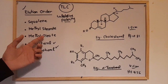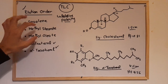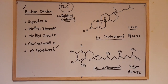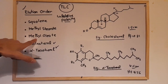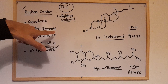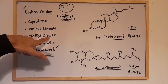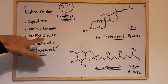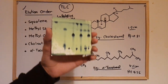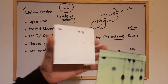Methyl stearate and methyl oleate are similar, but methyl oleate contains a double bond in its structure, making it slightly more non-polar. Because of this, methyl oleate travels slightly above methyl stearate on the TLC plate.